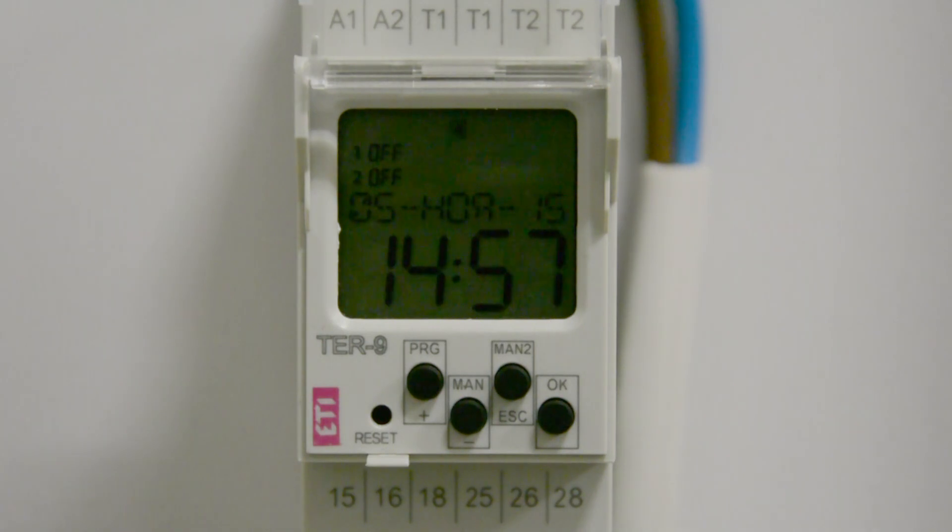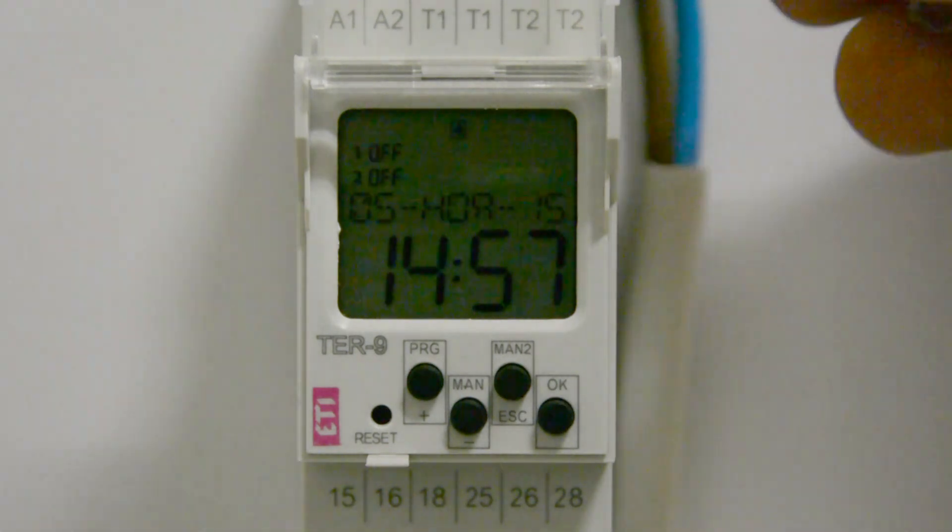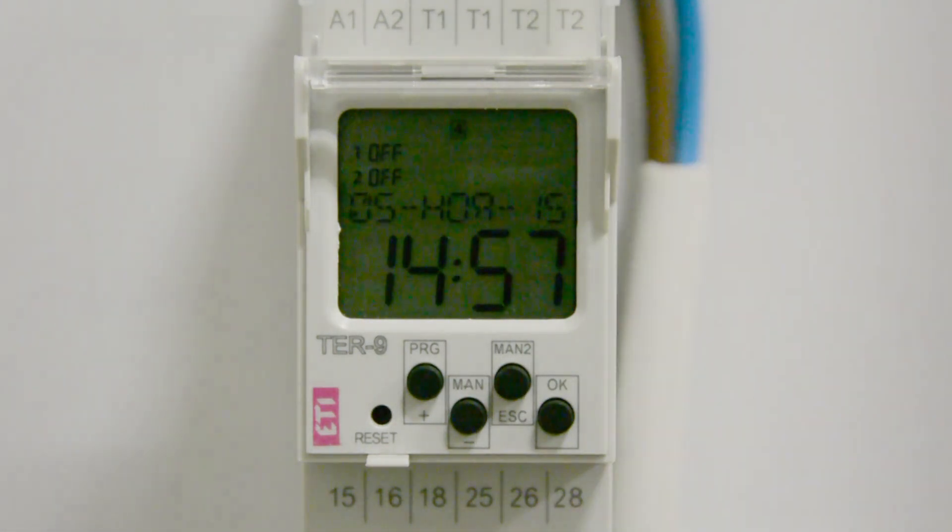This device provides a choice of weekly and annual programs. It has two inputs for connecting temperature sensors and two changeover contacts for each channel. In the case of using one temperature sensor, it is necessary to connect a 10 kOhm resistor to the second output.